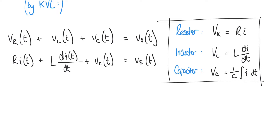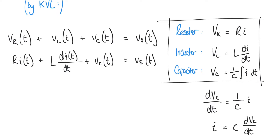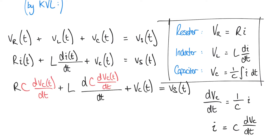This is going to involve differentiating both sides of the equation, since the I term is currently within an integral. We want to cancel that integral out with a derivative, so if we differentiate both sides we get dVC/dt equals 1/C times I. The integral has disappeared due to taking the derivative, and we can now rearrange that to say I equals C times dVC/dt. So now we have an expression for I in terms of VC, and we can substitute this into our equation. We see something that looks like: RC dVC/dt plus LC d²VC/dt² plus VC(t) equals VS(t).